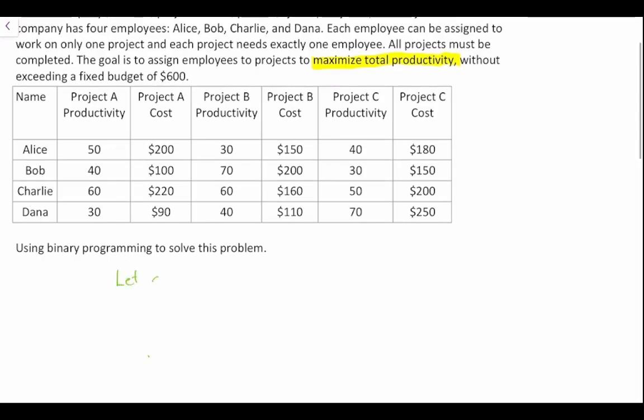We're going to say let Xij equal the employee j assigned to project i, where i is equal to A, B, and C, such that A is equal to project A, B is equal to project B, and C is equal to project C. And where j is equal to 1, 2, 3, 4.